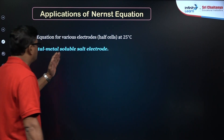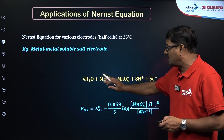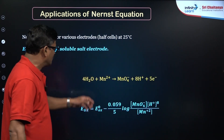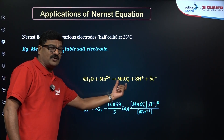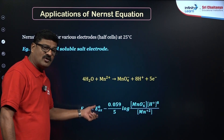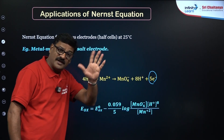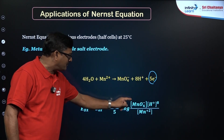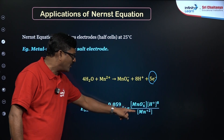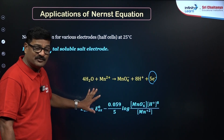For metal/metal ion electrodes, consider Mn²⁺ being converted to MnO₄⁻ in acidic media. Mn²⁺ is oxidized to Mn⁺⁷, involving 5 electrons. The electrode potential is: E = E°_oxidation - (0.0591 / 5) log([MnO₄⁻][H⁺]⁸ / [Mn²⁺]). This type of electrode potential calculation from the Nernst equation is very important for the NEET examination.